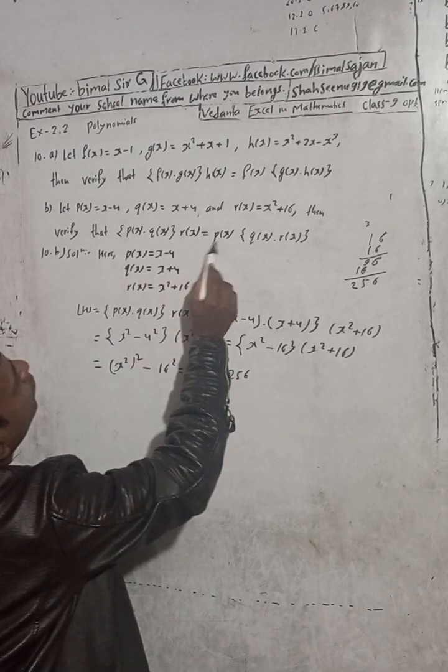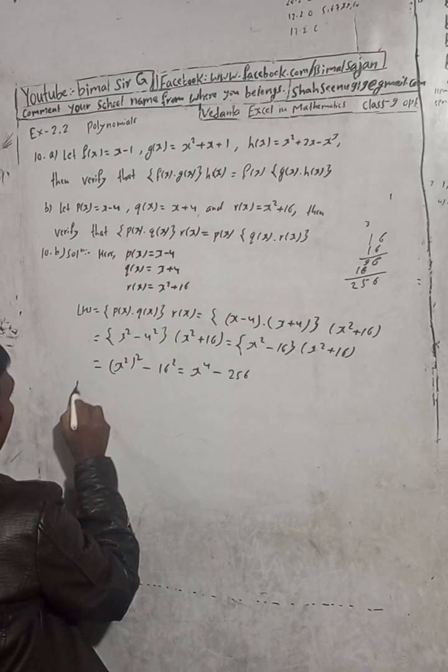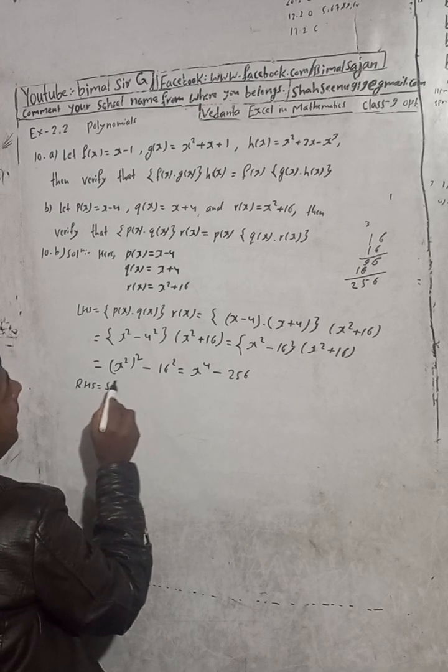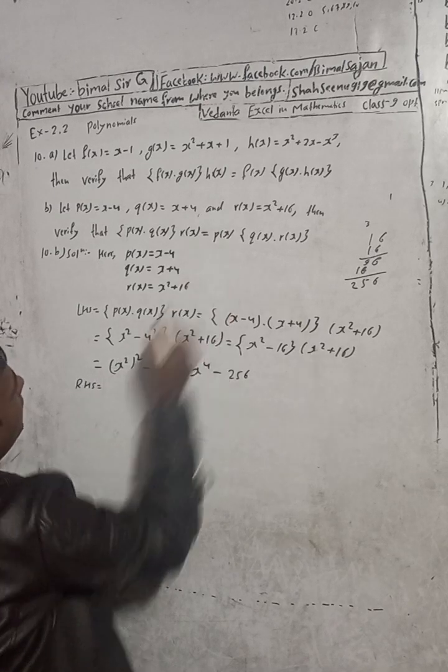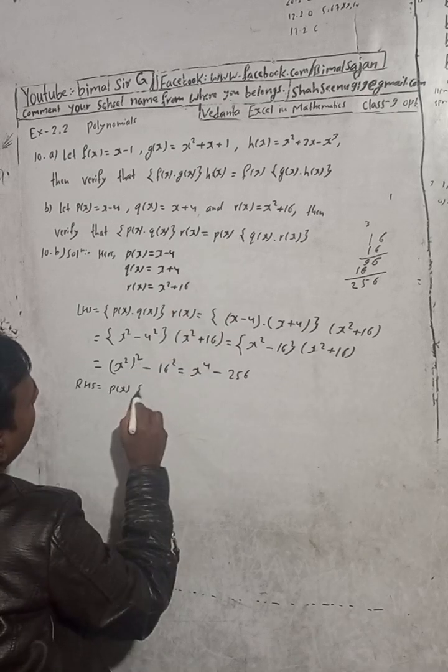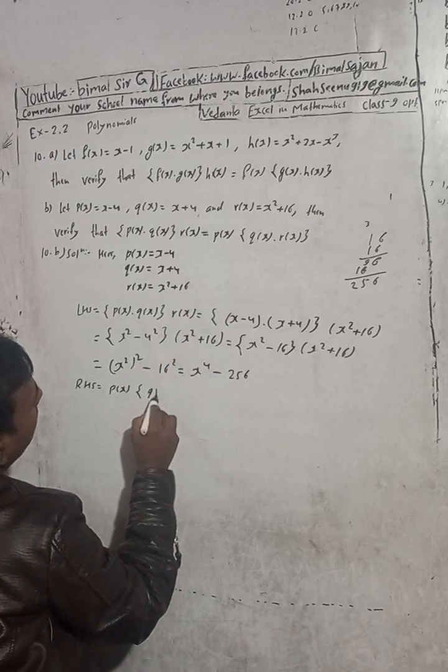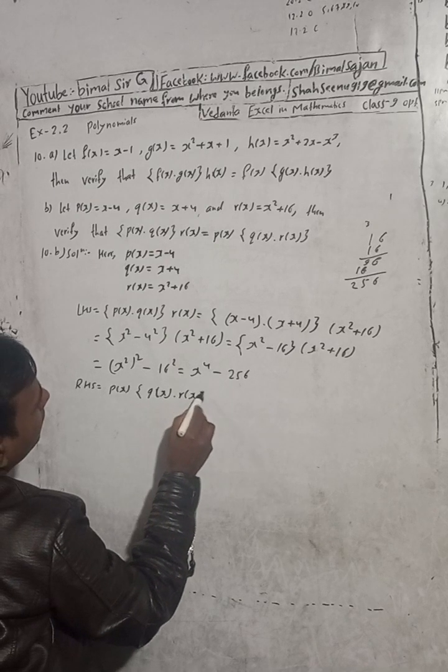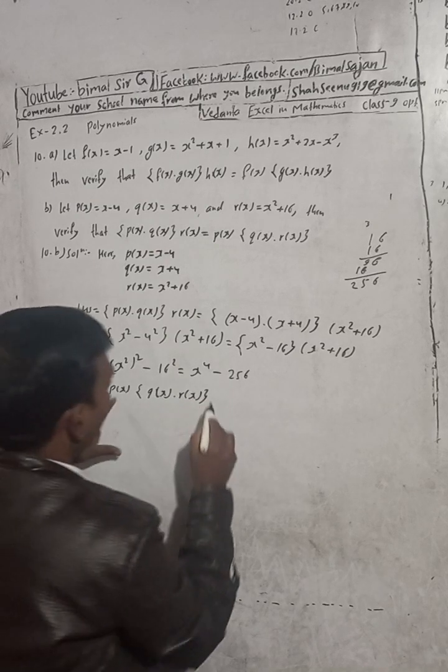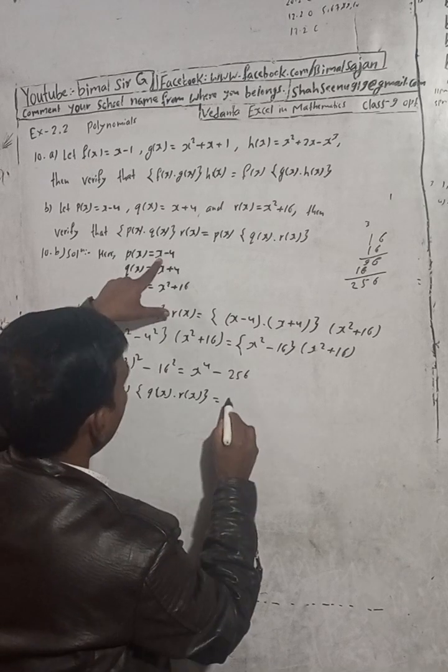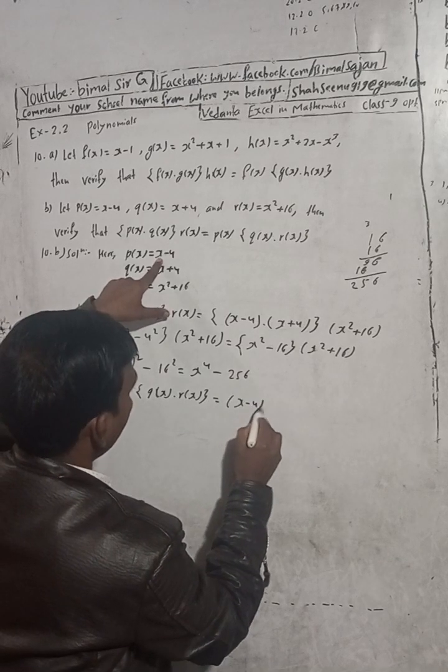RHS part, this is here. P(x) into q(x) times r(x). So here, this p(x), write it same. P(x) means this is x minus 4. And then this curly bracket, q(x) means what is q(x): this is x plus 4.